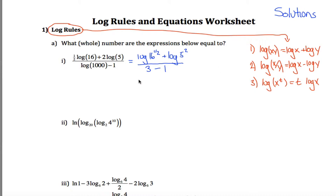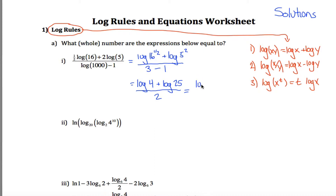Now I can apply the first log rule, but I'll clean things up first. The 16 to the one half is the same as the square root of 16, which is 4. And 5 squared is 25. So the denominator is 3 minus 1, which is 2. Now I can apply the first log rule: log of 4 plus log of 25 equals log of 100. So it's the log of 100 divided by 2. The log of 100 is 2, since 10 squared equals 100. So this is 2 divided by 2, which equals 1.